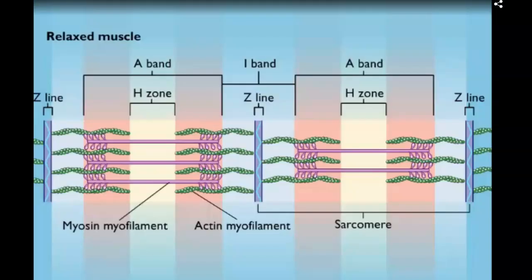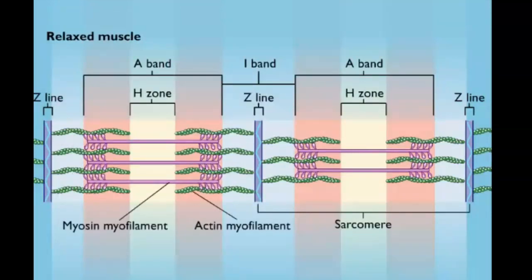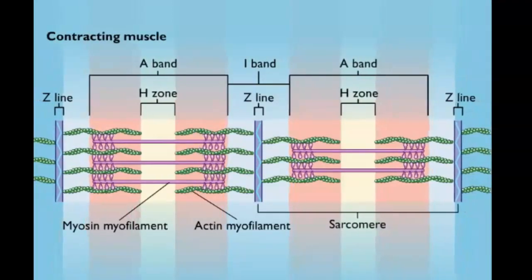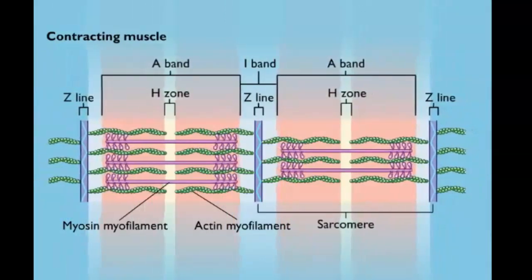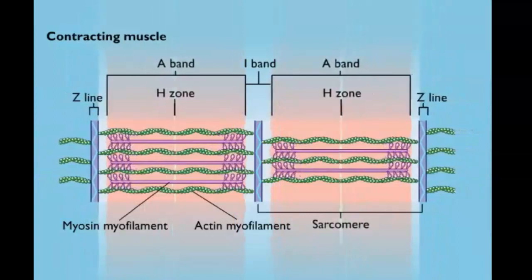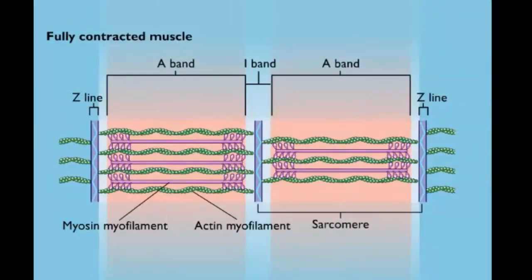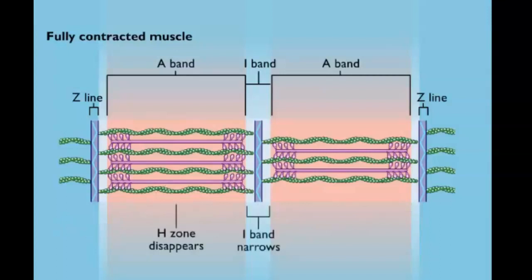Here is a final video showing how muscle contraction at the sarcomere takes place. In a relaxed muscle, actin and myosin myofilaments lie side by side, and the H-zones and I-bands are at maximum width. During contraction, the actin and myosin myofilaments interact; the actins are pulled toward the center of each myosin myofilament and the sarcomere is shortened. In the fully contracted muscle, the ends of the actin myofilaments overlap, the H-zones disappear, and the I-band becomes very narrow.